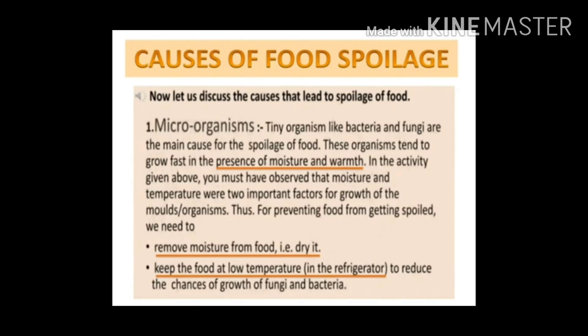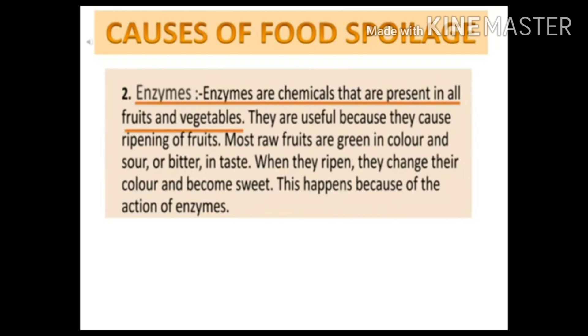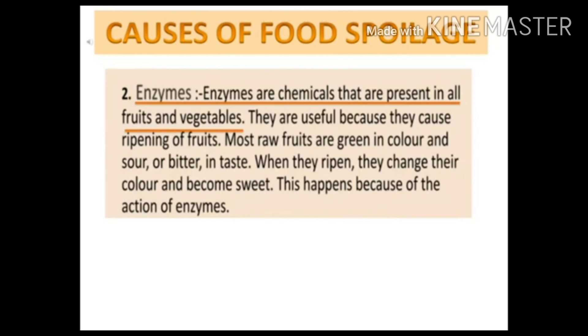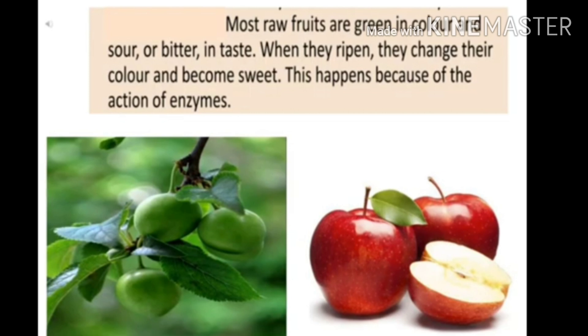The next cause is enzymes. Enzymes are chemicals that are present in all fruits and vegetables. Enzymes are useful because they cause the ripening of fruits. Most raw fruits are green in color and taste sour or bitter, but when they ripen, they change their color and become sweet — and this happens because of the action of enzymes. So we can say that enzymes are quite useful.